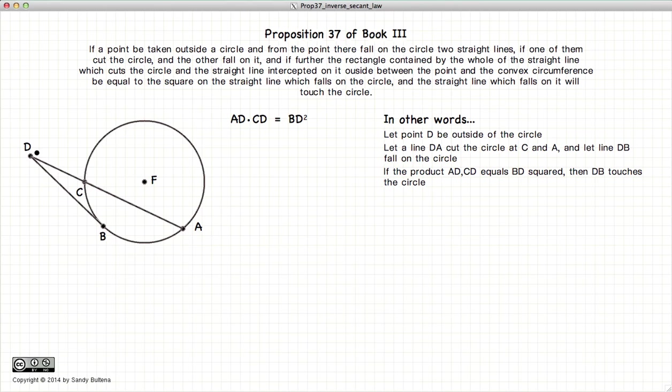or in other words, this distance multiplied by this distance is equal to this distance all squared, if this condition is true, then DB touches the circle.